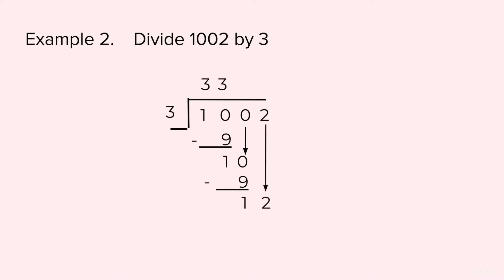3 fours are 12, so we will write 4 on top, 12 at the bottom. We subtract — we are left with 0. So the quotient is equal to 334 and the remainder is equal to 0.